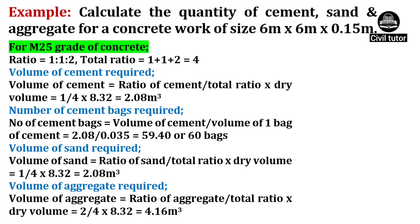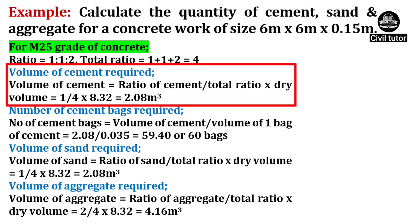The volume of cement required will be equal to ratio of cement upon total ratio, multiplied by dry volume. Ratio of cement is taken as 1, total ratio is 4 and dry volume is 8.32. Hence the volume of cement will be equal to 2.08m³.